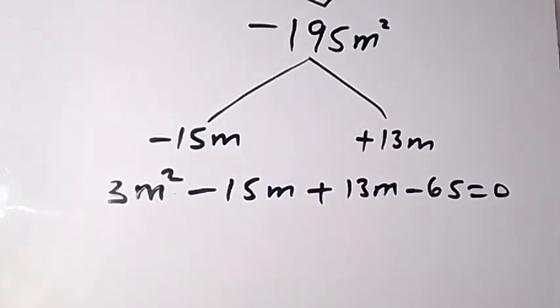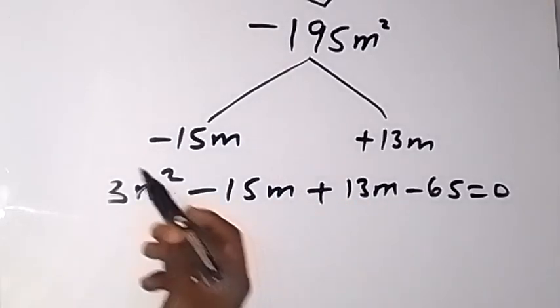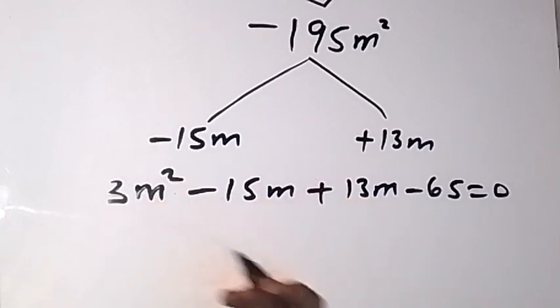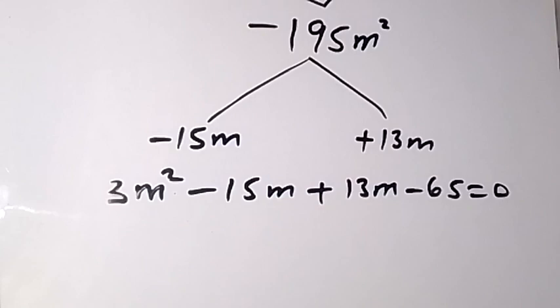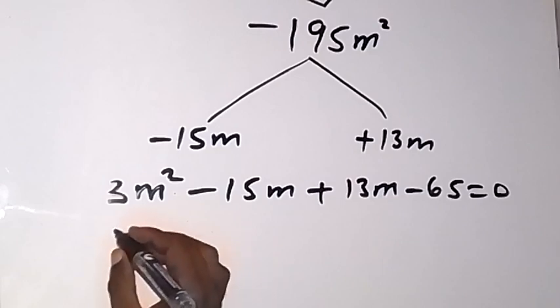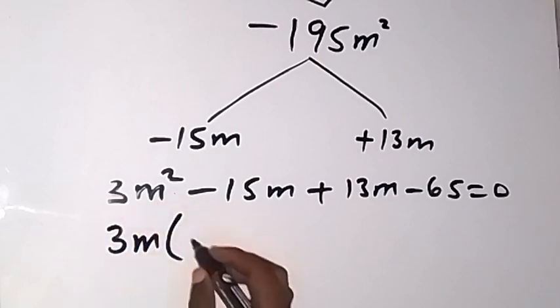Now you can group this one two by two and factor what is common out. When you group the first two and factor what is common out, you can see that 3m is common.